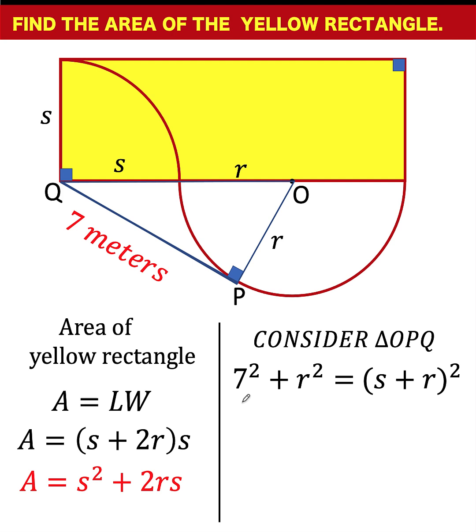Simplifying, this becomes 49 plus r squared at the left, and we expand the binomial at the right side as s squared plus 2rs plus r squared. Notice that this r squared and r squared are the same, so they can be cancelled out by subtraction. What's left is 49 equals s squared plus 2rs.